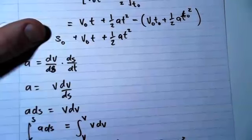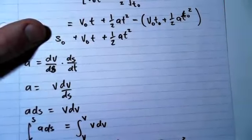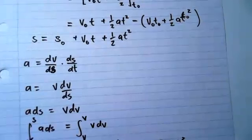So if we make V squared the subject, we end up getting this equation here which is the third equation of motion.